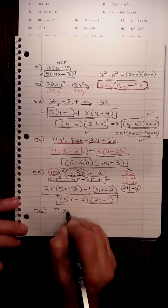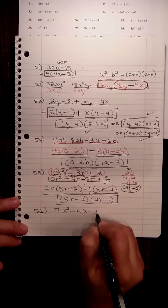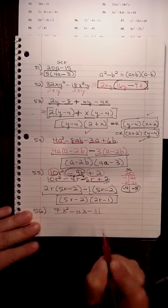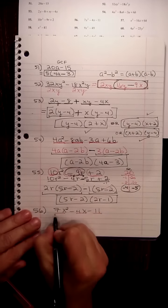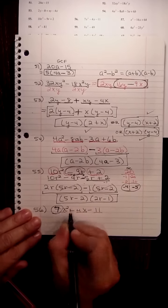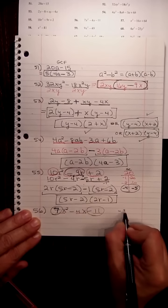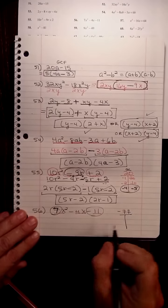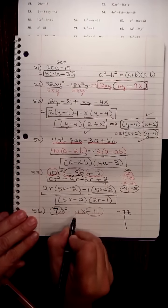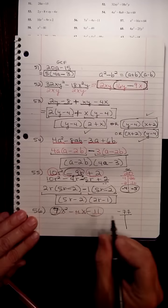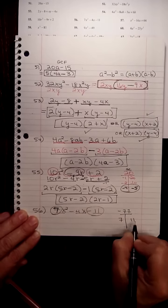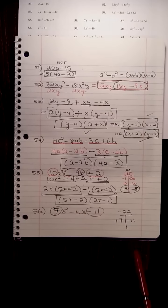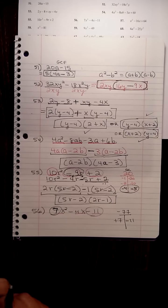56 is 7x squared minus 4x minus 11. So again, we do not have a number that we can divide all three of these by. So we have to take the number in front, the leading coefficient, 7 times the coefficient at the end, negative 11, and get negative 77, and come up with what multiplies to negative 77, but adds to a negative 4. And 7 times 11, if it's positive 7 times negative 11, that's negative 77, and that adds up to negative 4.